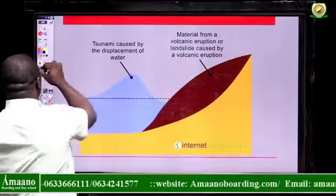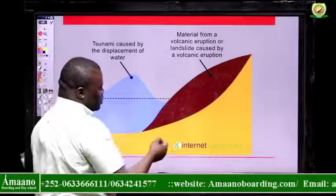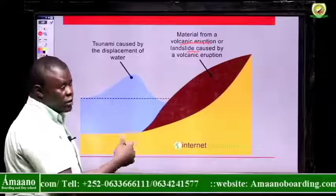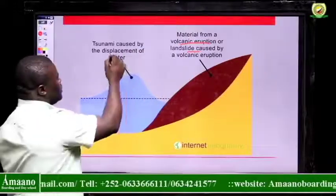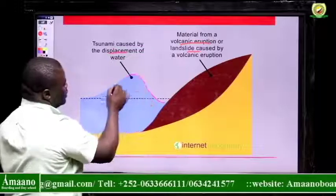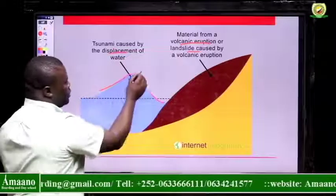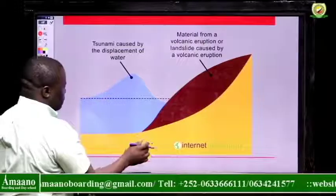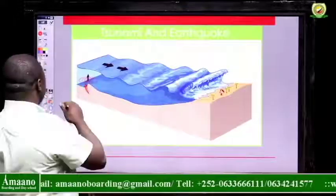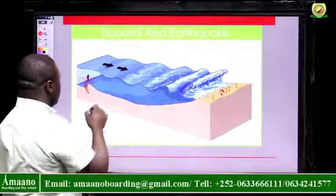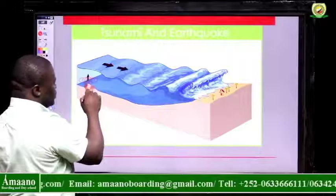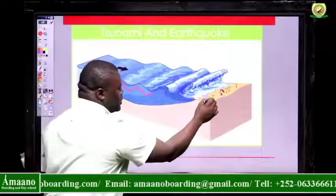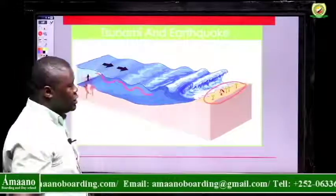Here is an illustration of a tsunami. The material from a volcanic eruption or a landslide causes elevation of the ocean floor, meaning displacement of water occurs. The water then starts flowing in very big waves towards the land. Another illustration shows how an elevation due to disruption on the floor causes a very large wave coming towards the land, covering everything in its path.